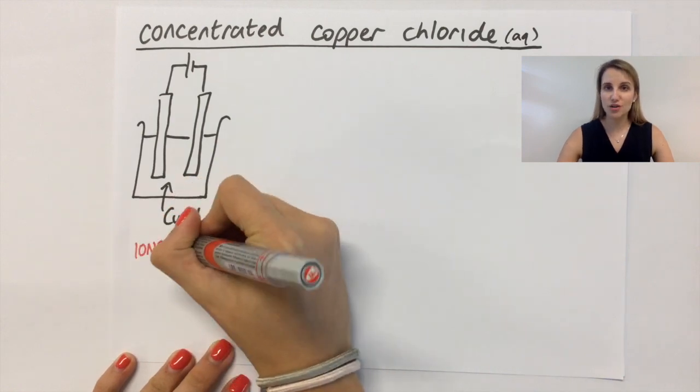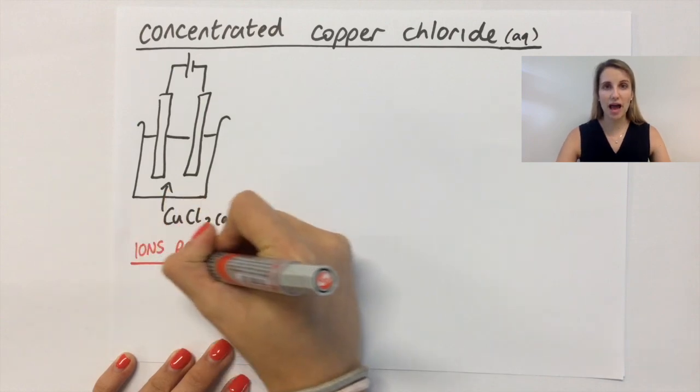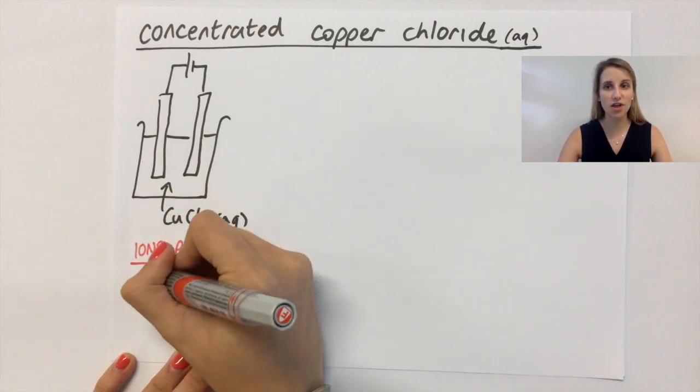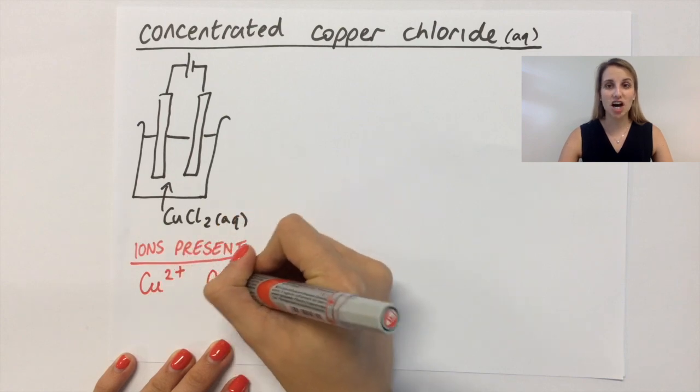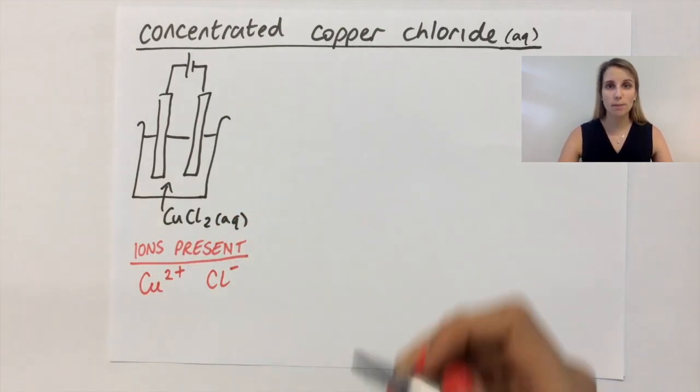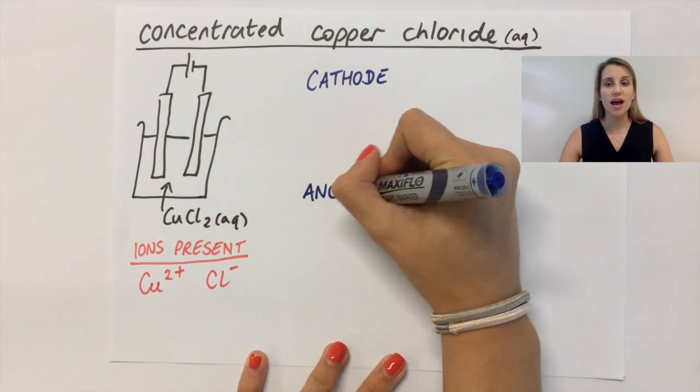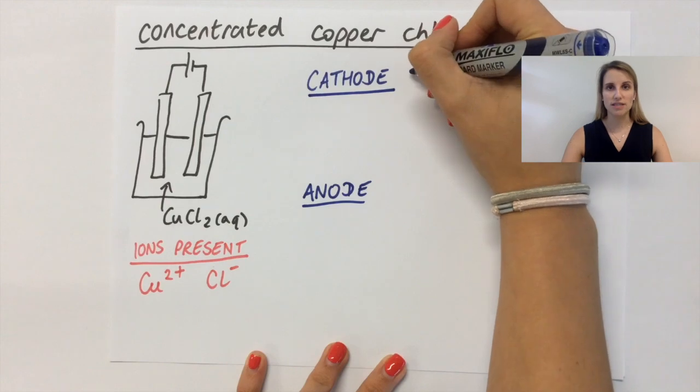The first thing we're going to do, like normal, is to look at the ions that are present and work out whether they'll be attracted to the cathode or to the anode. So in this case, the ions that I've got here are Cu2+ and Cl-. The Cu2+ will be attracted to the cathode and the Cl- will be attracted to the anode.